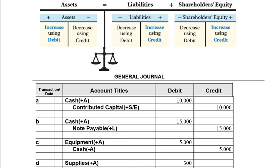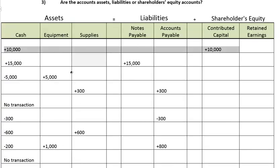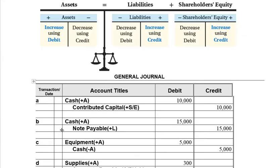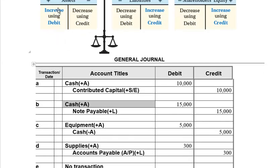In our second entry, we borrowed $15,000 from the bank, and the bank gave us a note — that note is a liability to us because it's due in two years. We don't need to know whether it's long-term or short-term to journalize it at this point. Cash went up, so we debit cash (left side). Note payable is a liability increasing, so we credit note payable (right side) for $15,000.